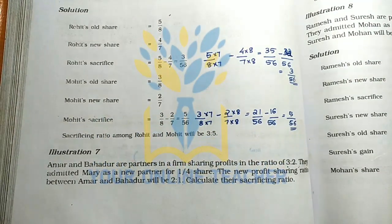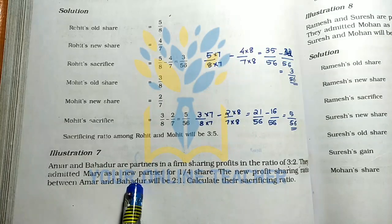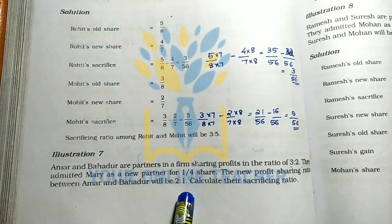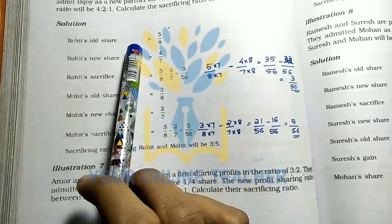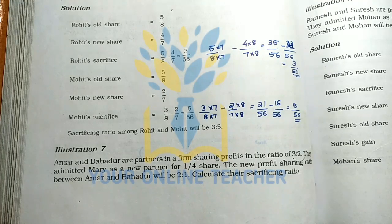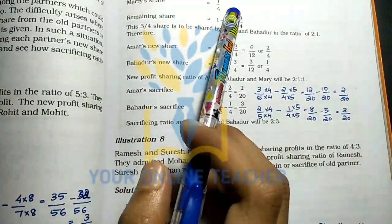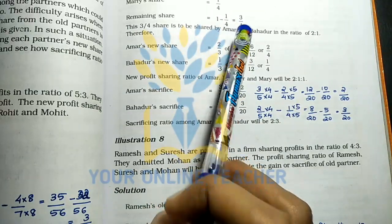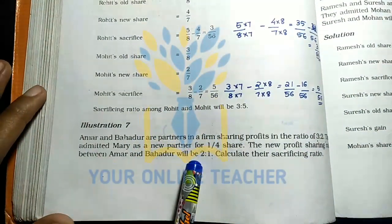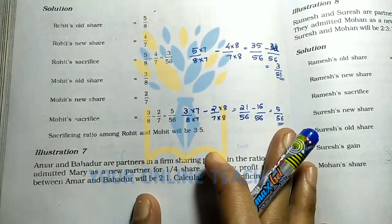Another problem: the old share is 3 to 2. A new partner gets a share of 1 by 4. The new profit sharing ratio between Amar and Bahadur will be 2 is to 1. If you look at this, there are 3 ratios: 4 is to 2 is to 1. Amar and Bahadur's ratio will be 2 is to 1. We share the total of 3 by 4 among the existing partners, and the new partner gets 1 by 4.